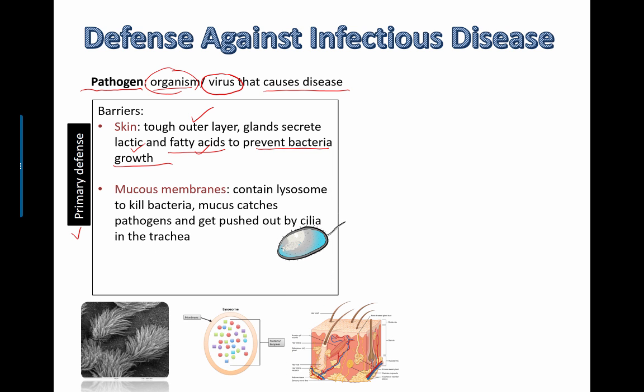Mucus membranes are another additional layer that can provide some protection, and they contain lysosomes, which are basically membrane-bound organelles that contain enzymes that are good at digesting bacterial cell walls. So a lot of places — like in your eyes, in the trachea, in the soft mucus membranes in other parts of the body, and in the reproductive organs — contain some of these lysosomes to help destroy extra bacteria. The mucus catches the pathogens, and the cilia lining the trachea actually beat and bring this out of the lungs up to our throat. Most of us just swallow it without thinking about it.